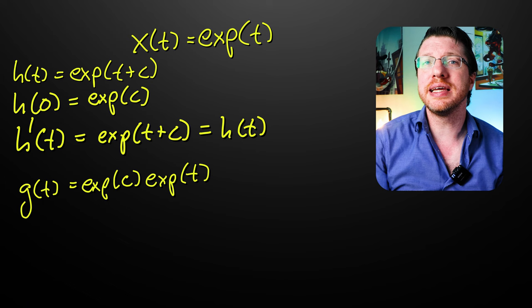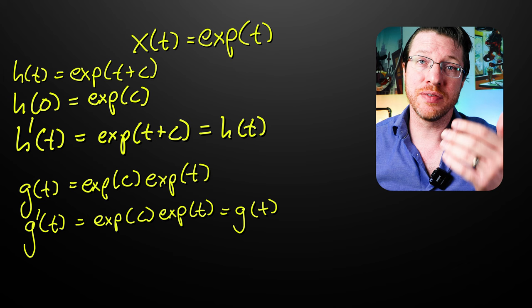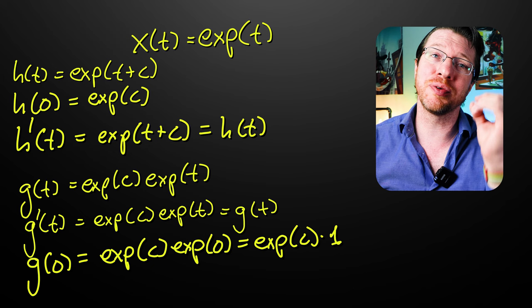And that satisfies this derivative is clear. And g of t is equal to the exponent of c times the exponent of 0, but the exponent of 0 is equal to 1 by definition. So there we go.